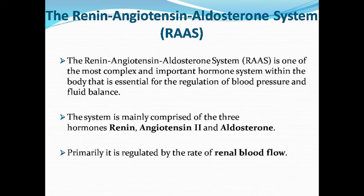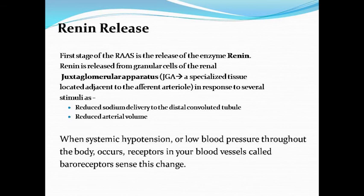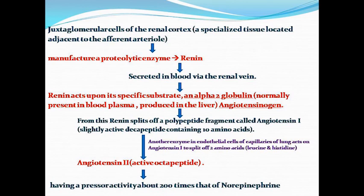Renin is the first stage enzyme, which is secreted by granular cells in response to certain stimuli. These stimuli include reduced sodium in the distal convoluted tubules and reduced arterial volume. When our body has low blood pressure, the baroreceptors in blood vessels detect the change. Let's understand this whole process: these are juxtaglomerular cells, which are located in the renal cortex.